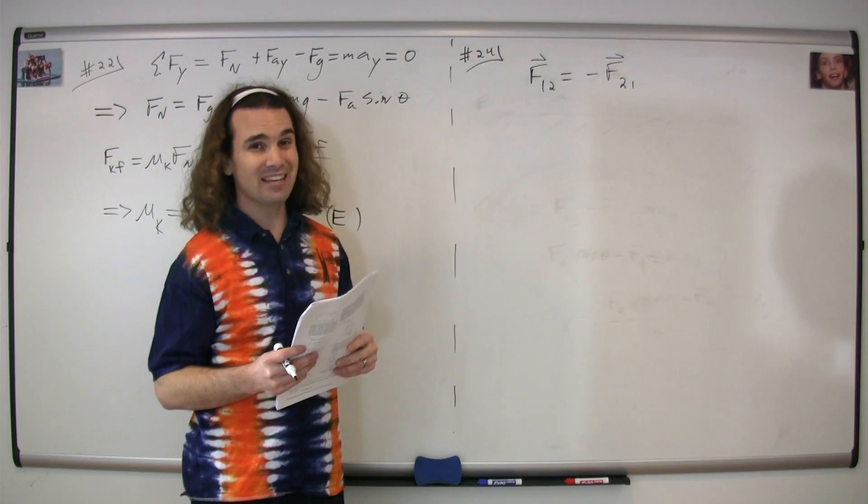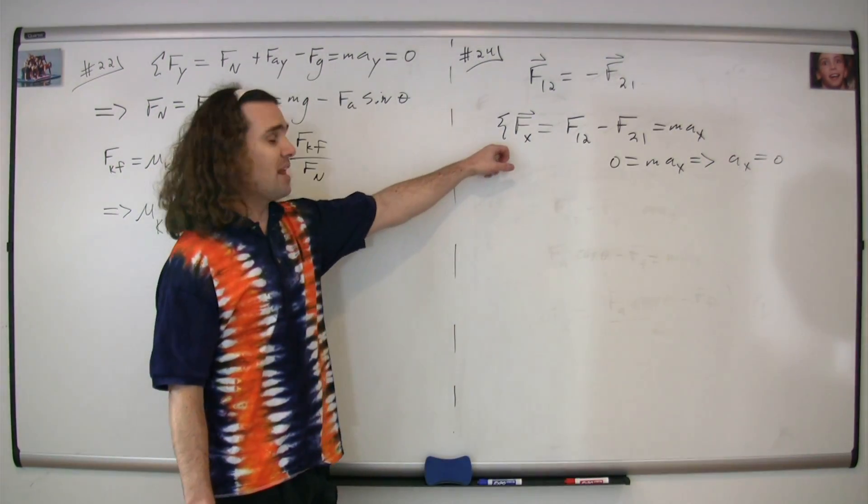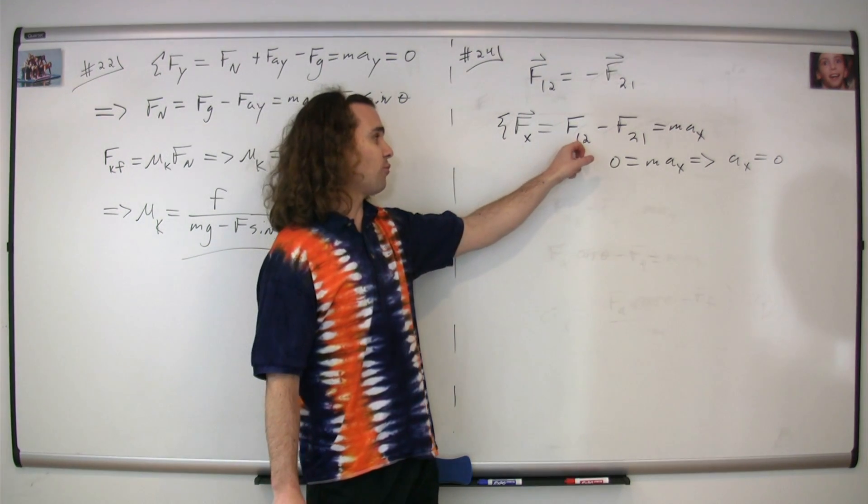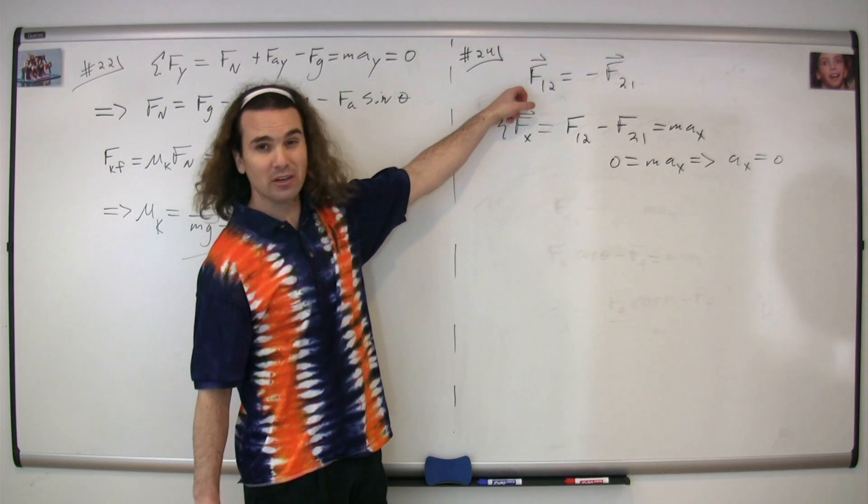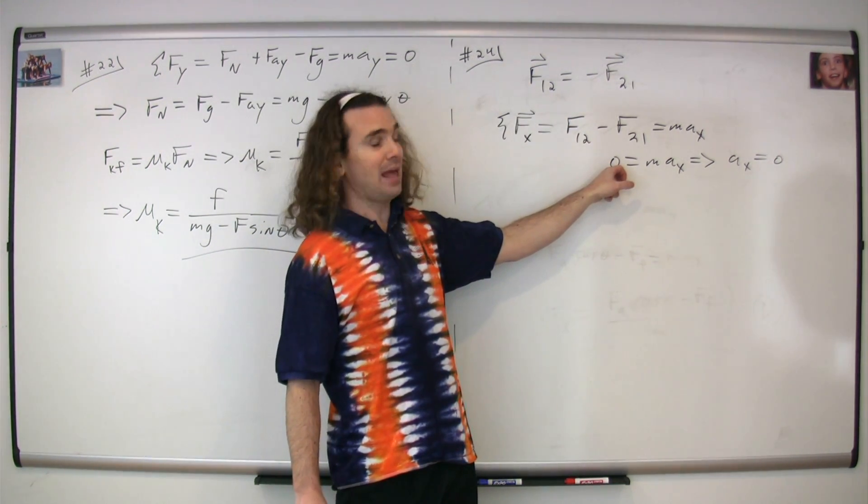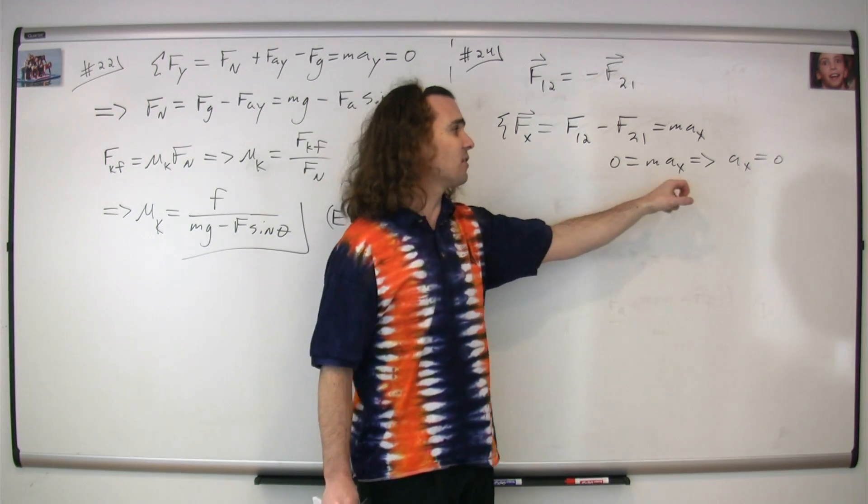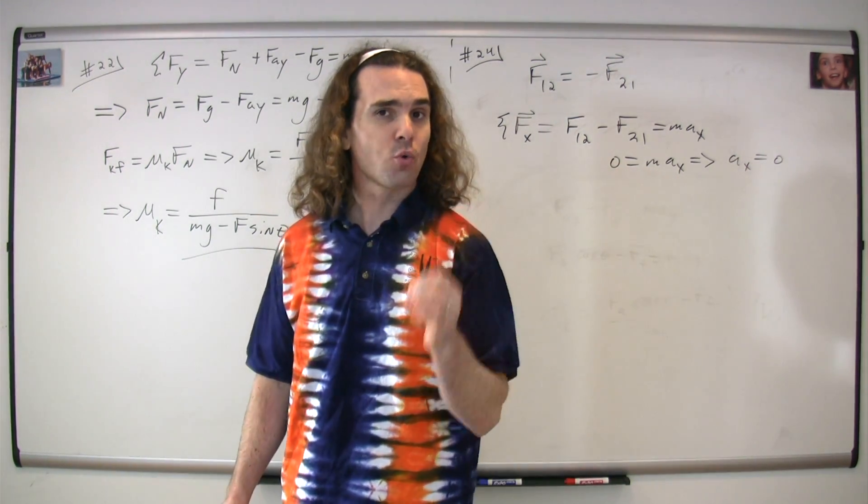Which means, if you use Newton's second law, you get the net force in the x-direction equals the force of one person on the second person minus the force of the second person on the first person. But we showed that those are equal in magnitude. Therefore, the net force actually works out to be zero. Therefore, the acceleration in the x-direction of the center of mass of the system works out to be zero.